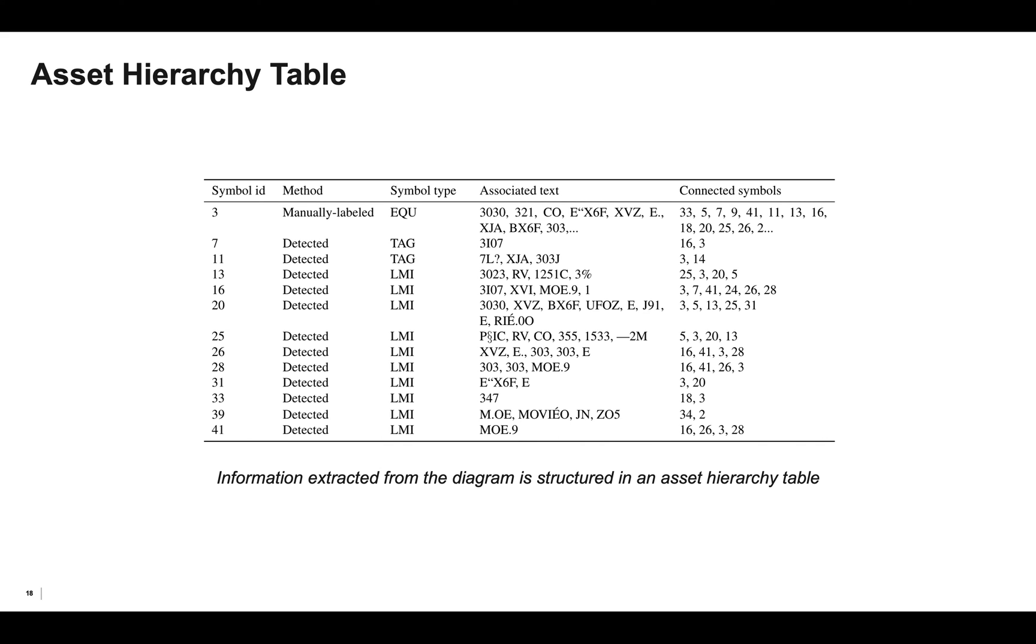The final output of the pipeline is an asset hierarchy table which structures all of the information extracted from the diagram. For each detected symbol, it contains its symbol type, any associated text, and IDs of connected symbols. This, in essence, is the digitized representation of the engineering diagram.